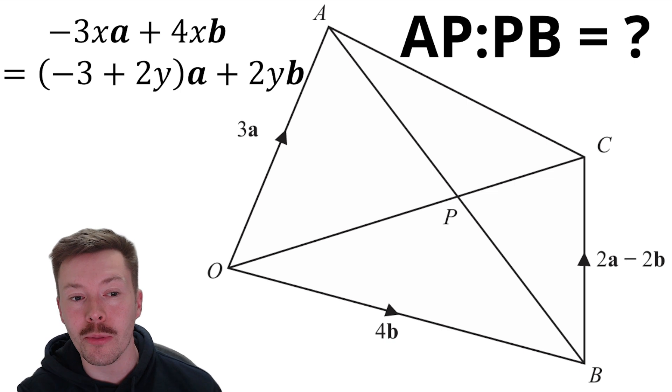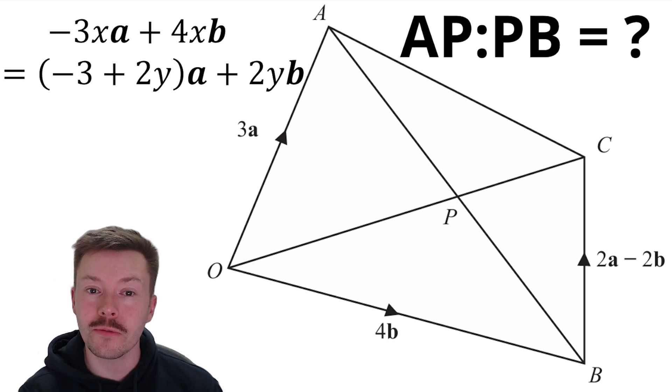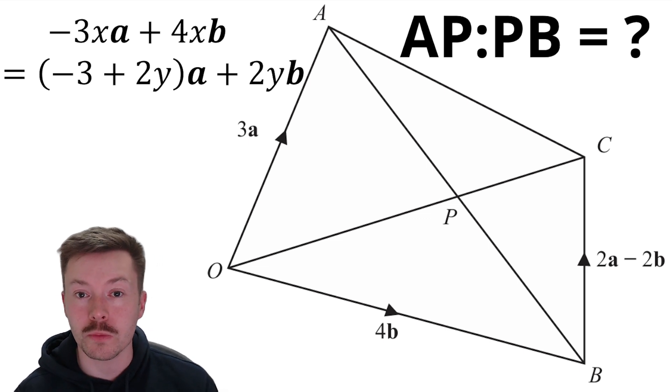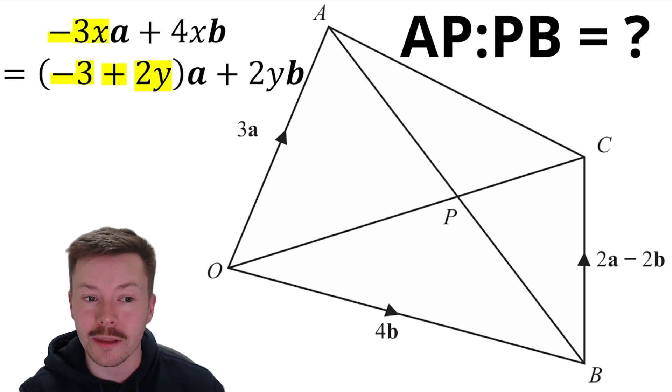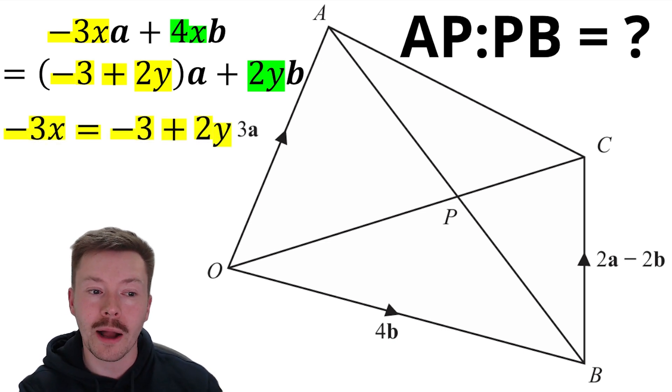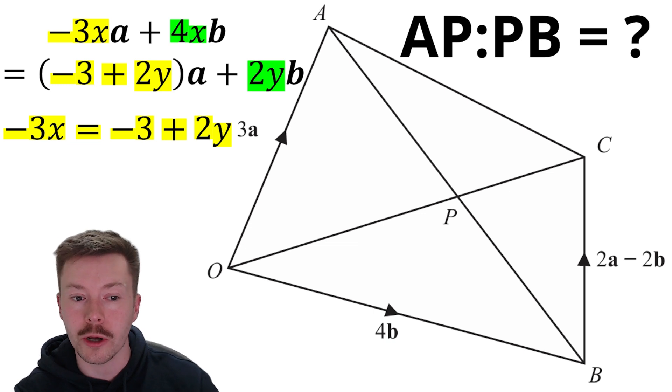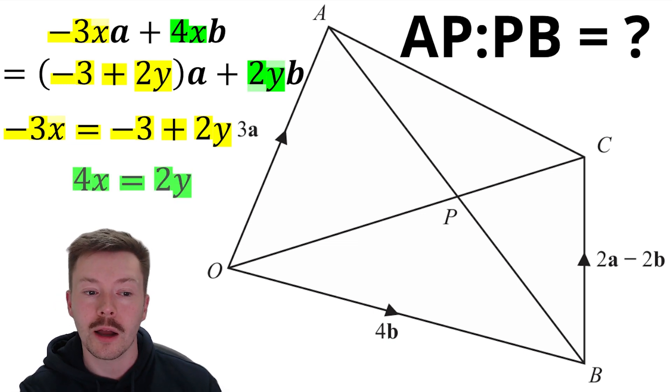Now, the reason that I have done that is because I know these two vectors are the same. If they are the same, which they are, then each component, so the A components must be equal and the B components must be equal. And so what we can do is start to equate these things. Okay, so there's the A component in yellow and the B component in green. Now, that means, like I say, they must be equal. So minus 3X must be equal to minus 3 plus 2Y, and 4X must be equal to 2Y.